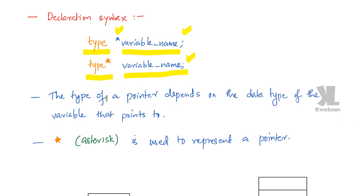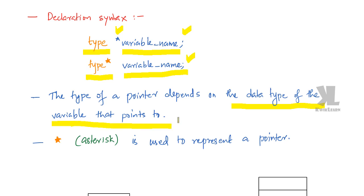The type of pointer depends on the data type of the variable that it points to.